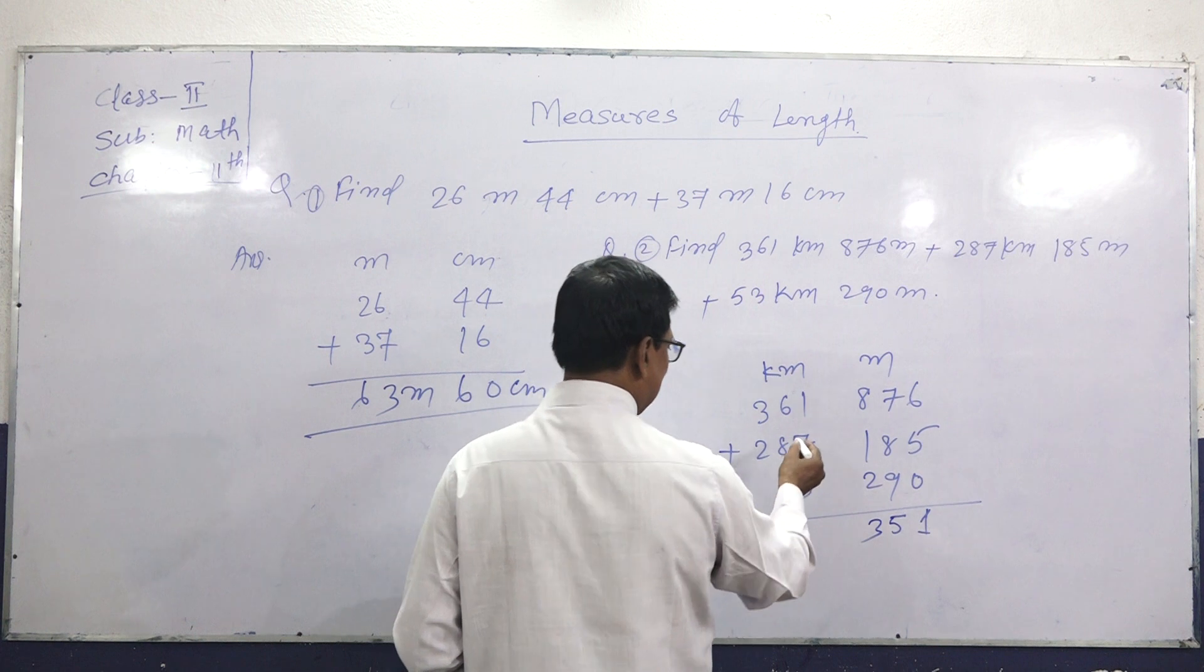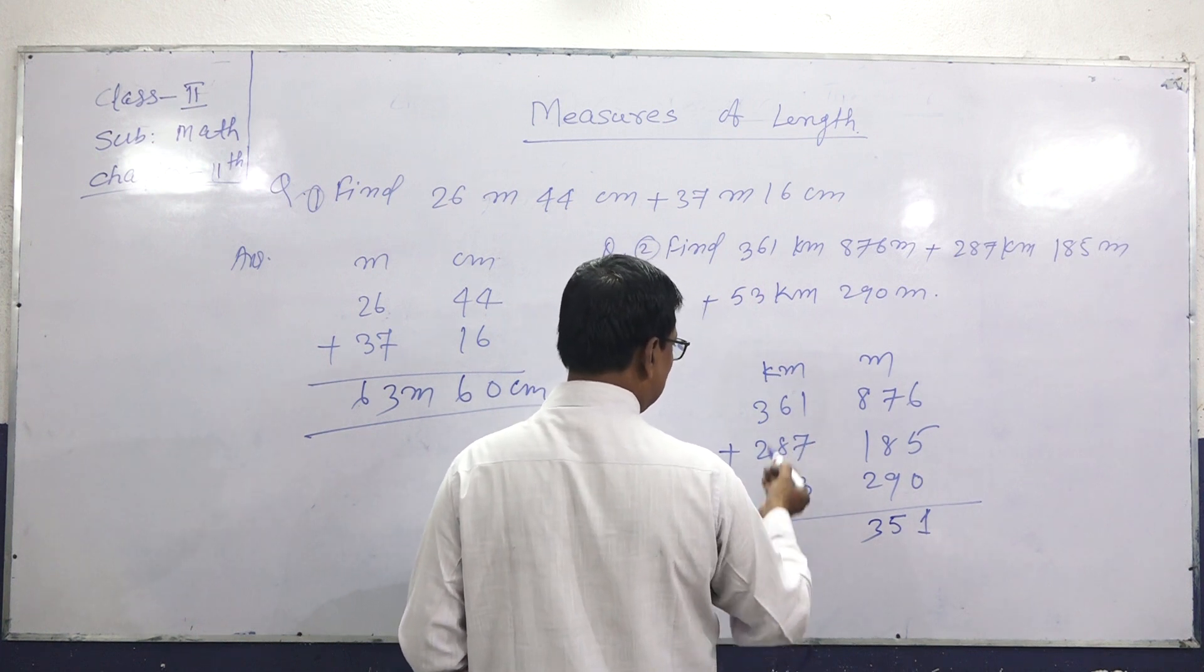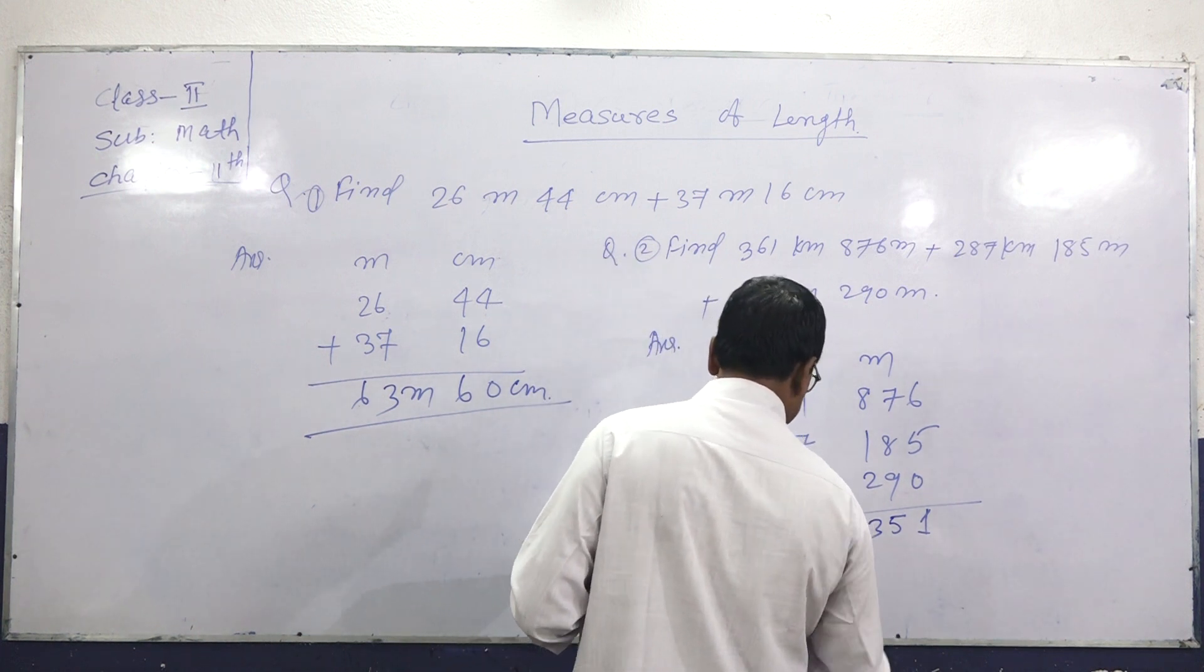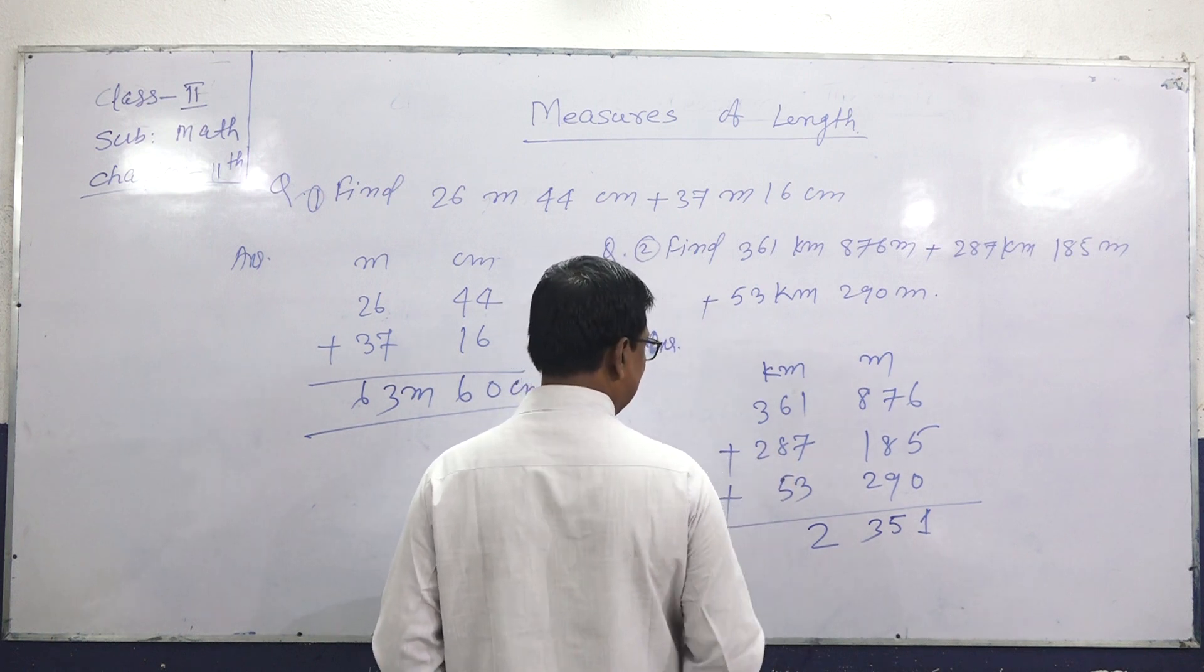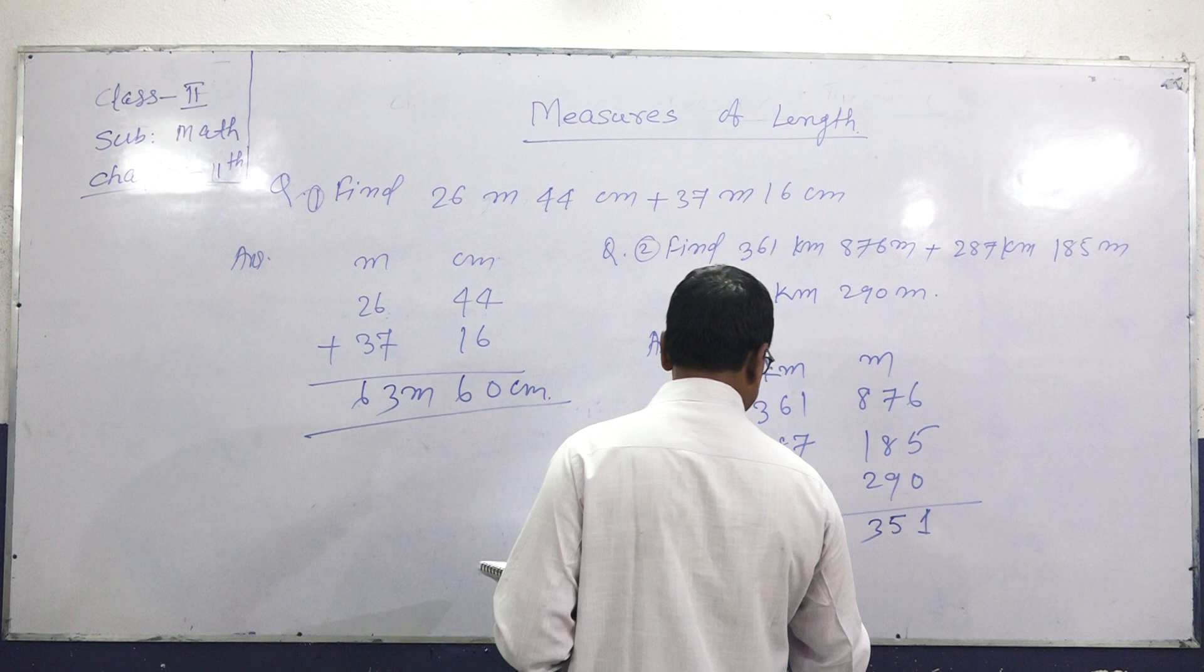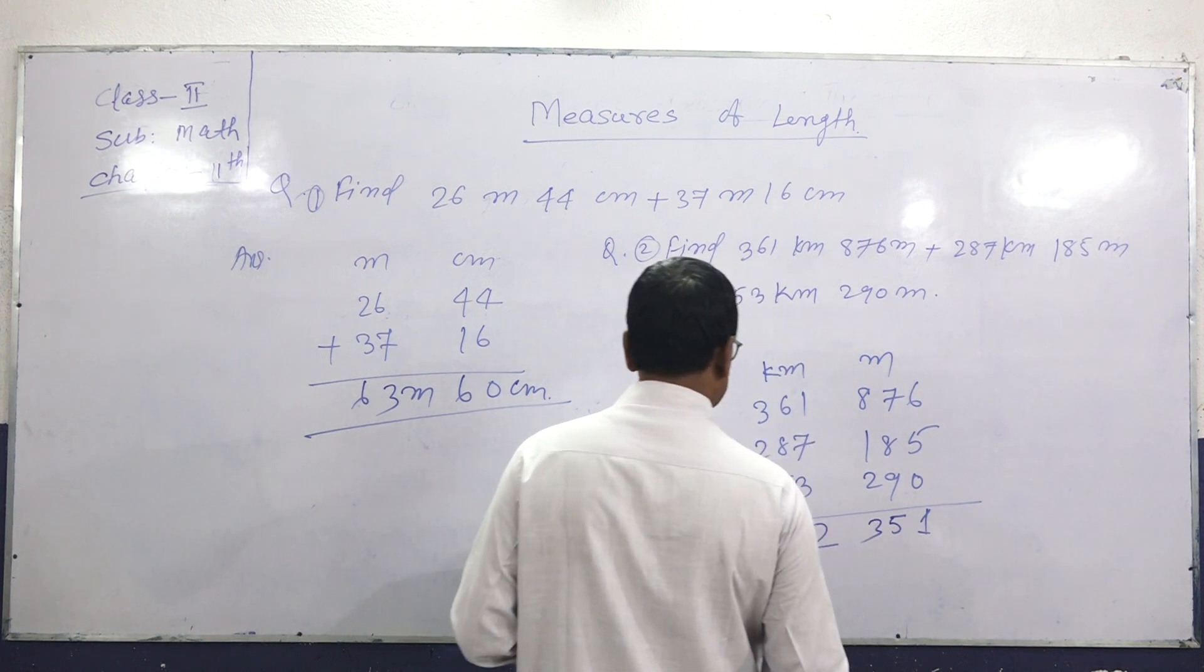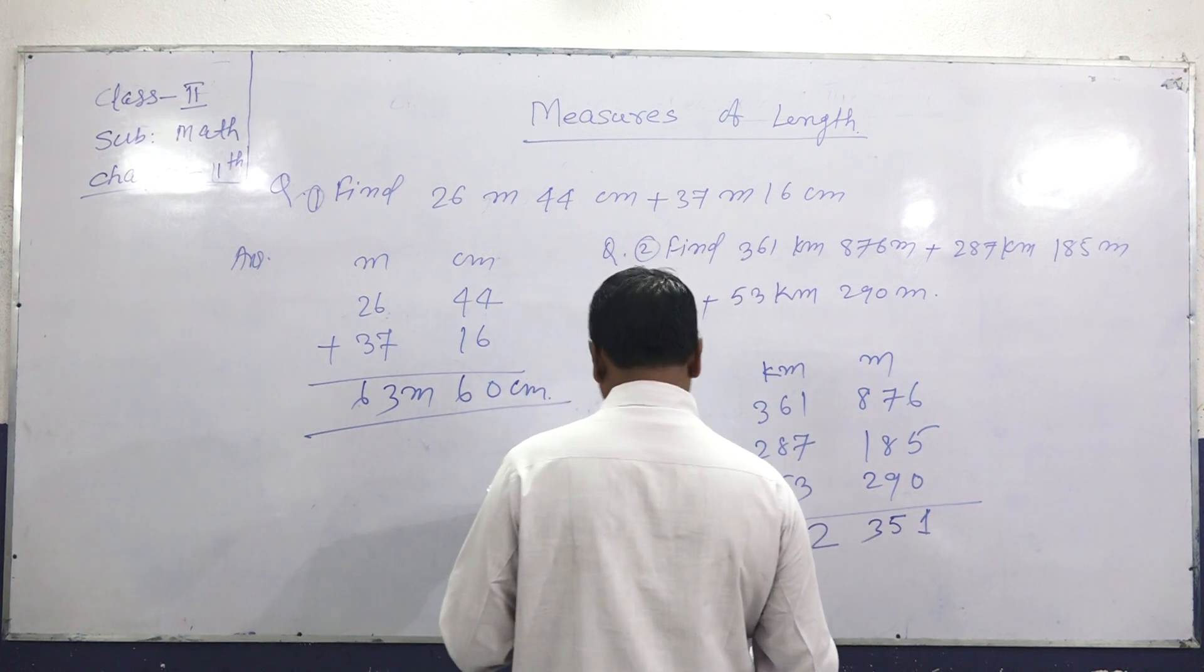7 plus 3 equals 10, plus 1 equals 11, plus 1 equals 12. Carry 1. 5 plus 1 equals 6, plus 6 equals 12, plus 8 equals 20. Carry 2. 3 plus 2 equals 5, plus 2 equals 7.